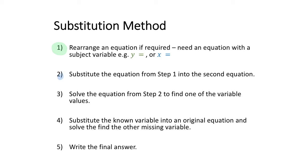The second step is to substitute that equation from step one — the one that has the variable as the subject — into the second equation to form a new equation. The next step is then to solve that new equation formed in step two, and that will allow you to identify one of the variables.